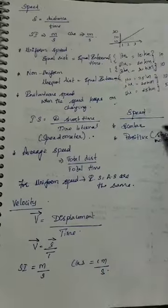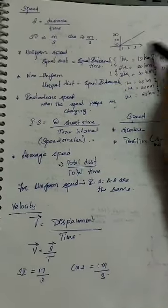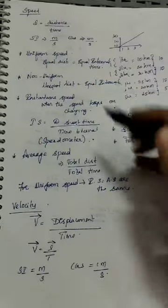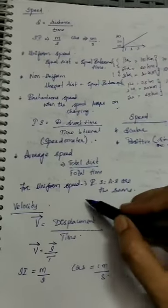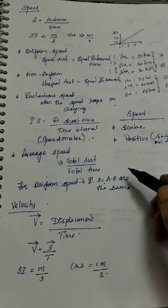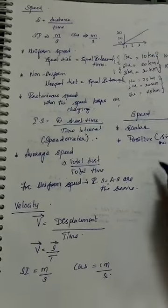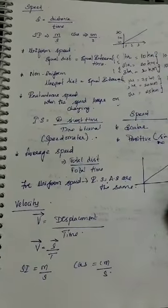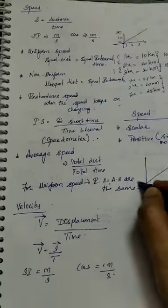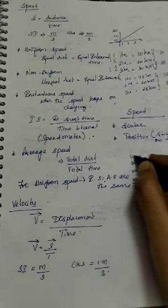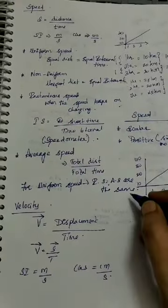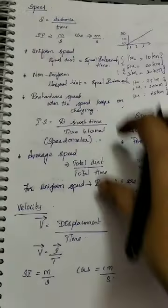Average speed is the total distance divided by total time. For example, if I travel for 10 hours — whether uniform or non-uniform — the total distance over total time gives the average speed. In the case of uniform speed, the instantaneous speed and average speed will be the same, because equal distance is covered in each interval regardless of the time.